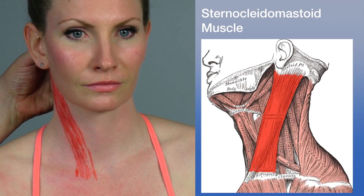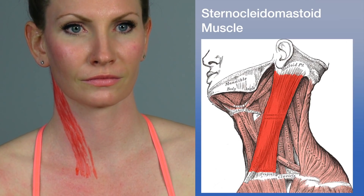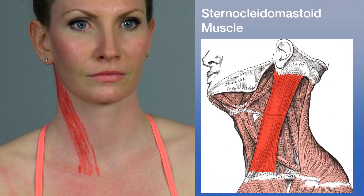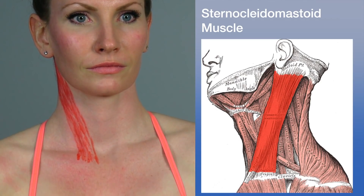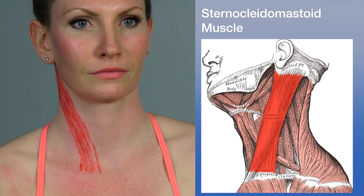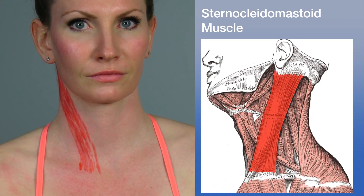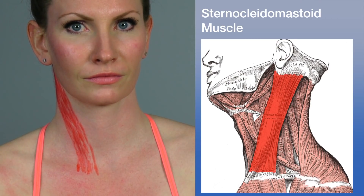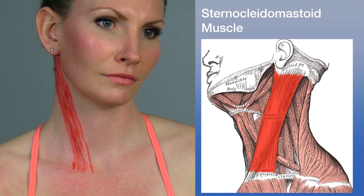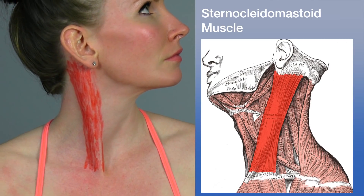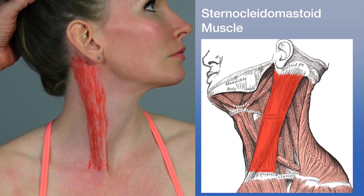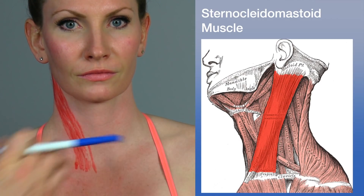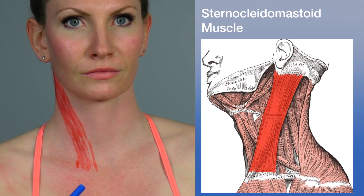When the skull is in a fixed position, the sternocleidomastoid elevates the sternum and clavicle, thereby assisting in inspiration. When the thoracic cage is fixed, unilateral contraction causes ipsilateral bending and contralateral rotation of the head, as well as some extension. Bilateral contraction of both muscles results in extension of the head.